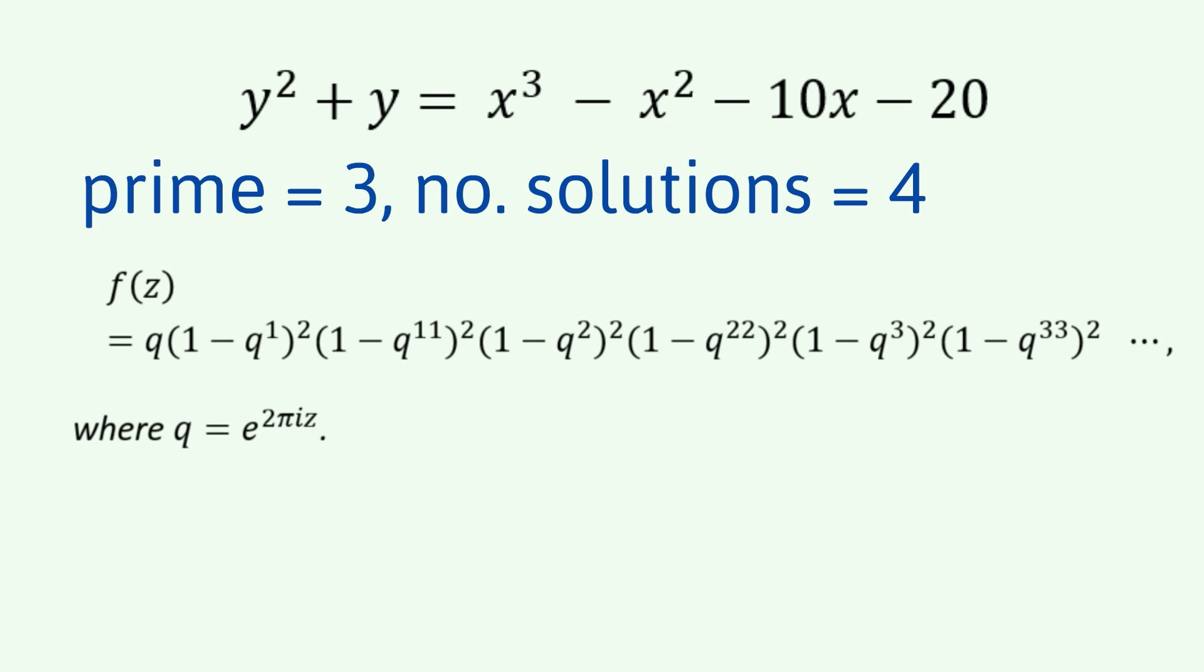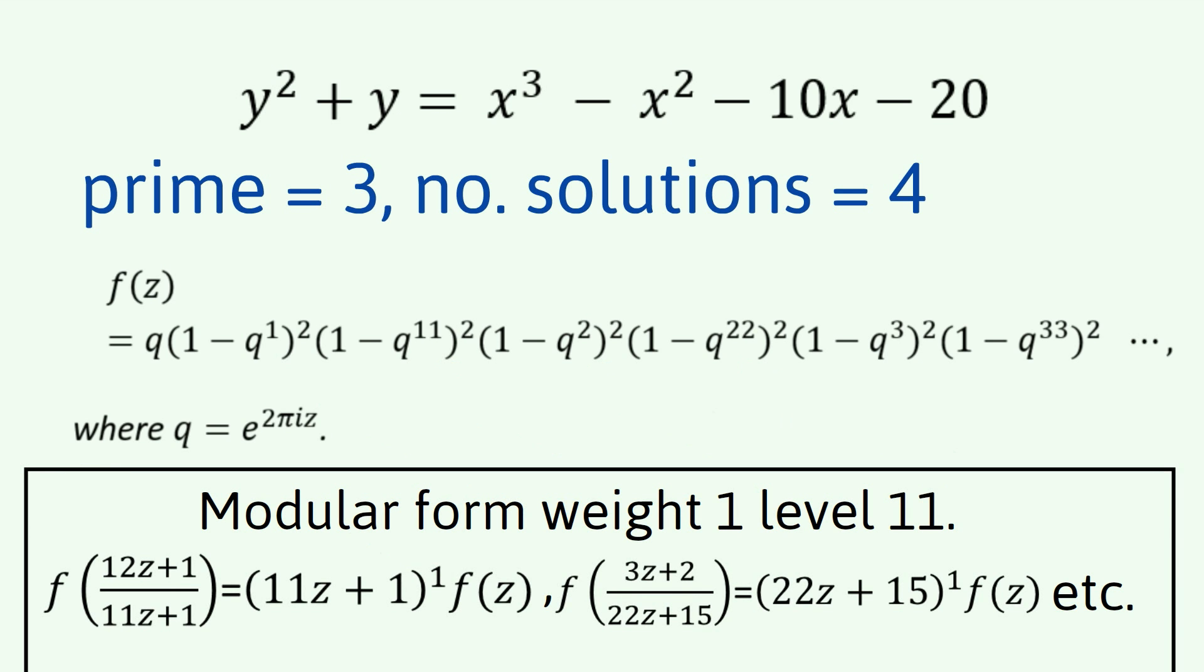And there's a bit of a pattern as you go across. We've got here 1, the power of q is 1, then 11, 2, and then 22, 3, and then 33, and on it goes. This turns out to be a modular form of level 11. So, it satisfies those conditions we saw before.